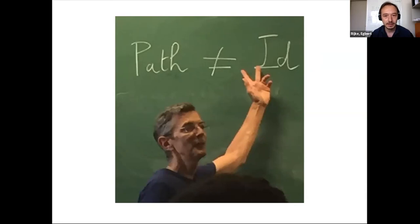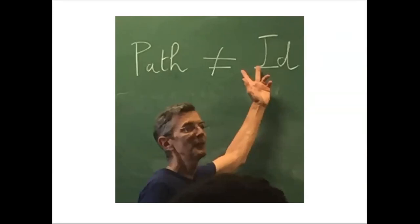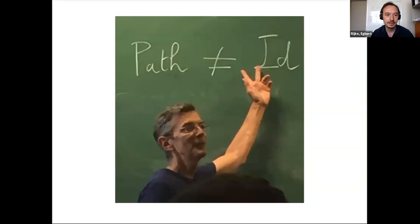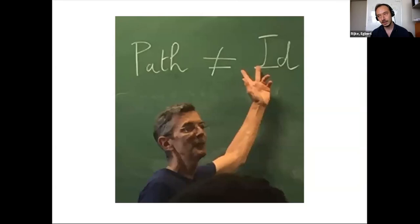I'm going to call them 'identifications' as well as paths. For me, paths are really maps out of an interval object — they're defined relative to an interval object. In cubical type theory, that interval object is given synthetically and primitively, and the path objects will be equivalent to the identity paths, but this is not the only way.